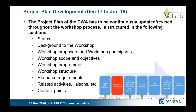This project plan is absolutely mandatory for a CWA, and it has to be continuously updated throughout the workshop project. You will see the sections: the status of a document or CWA, the background of the workshop, the proposals, the workshop participants, the scope and objectives, the program, its structure, the resources which are required, and if there are related activities and liaisons they have to be mentioned, and the contact points for any questions have to be documented.